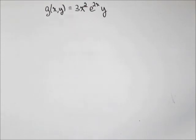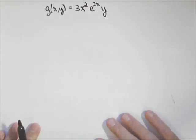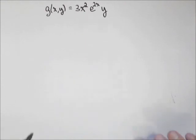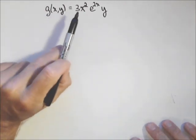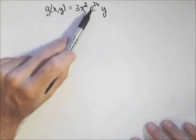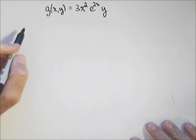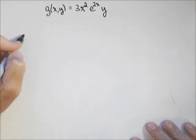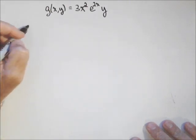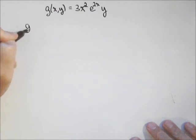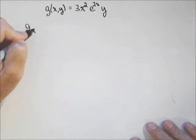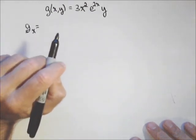In this video, we're going to look at calculating some partial derivatives of some functions, just to get a little bit of practice. We have three x squared e to the two xy. As mentioned in previous videos, the biggest thing is when you're taking the partial with respect to some variable — so if we want to take the derivative of g with respect to x, we need to think of y as a constant.